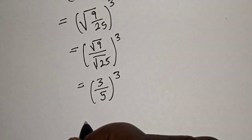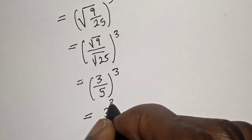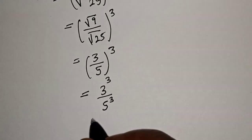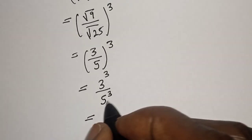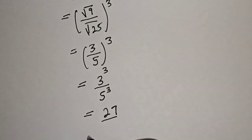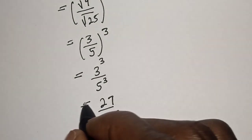This is equal to 3 raised to power 3 over 5 raised to power 3. 3 raised to power 3 is 27 over 5 raised to power 3 is 125, and this is the final answer.